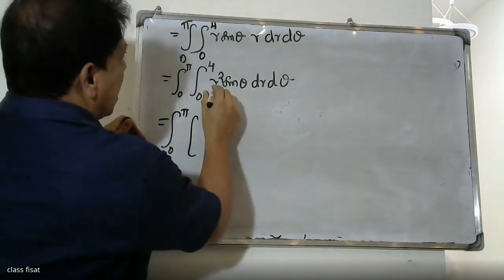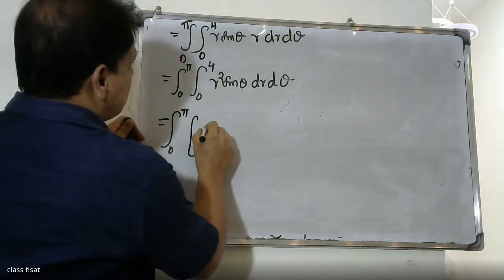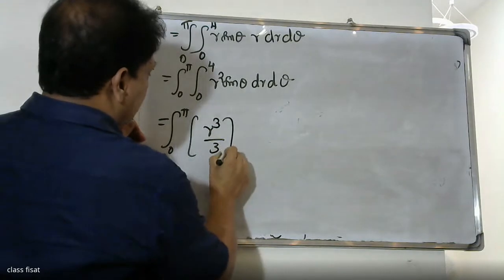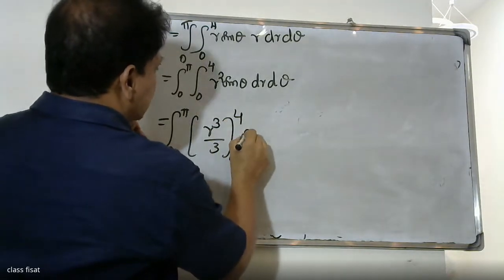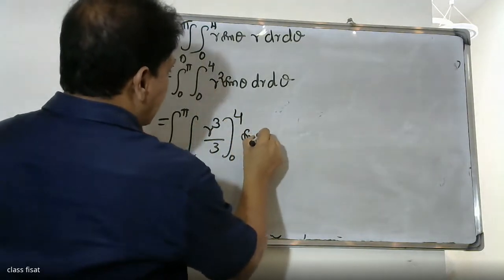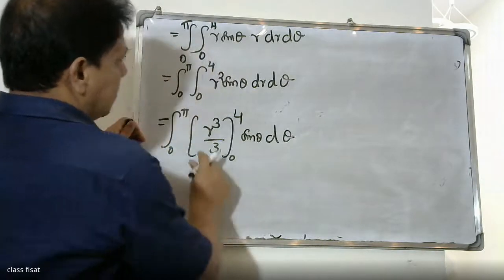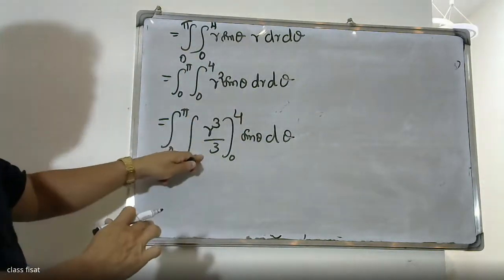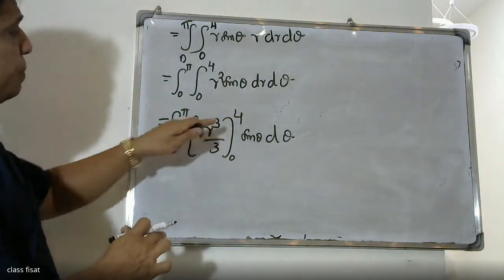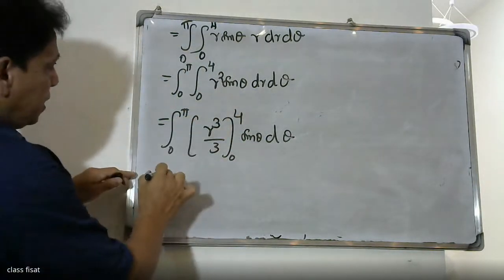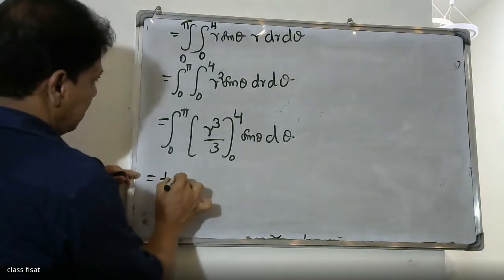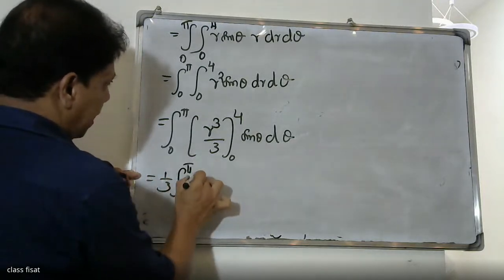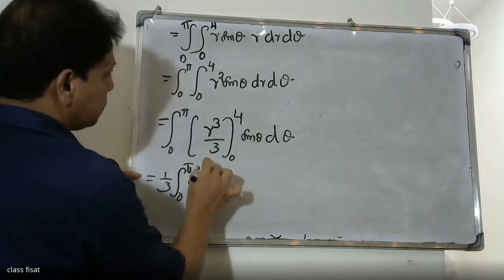Integrating the inner integral: the integral of r² with respect to r gives r³/3. Evaluating from 0 to 4 gives 4³/3 = 64/3. So we have (1/3) · integral from 0 to π of 64 sin θ dθ, which equals (64/3) · integral from 0 to π of sin θ dθ.